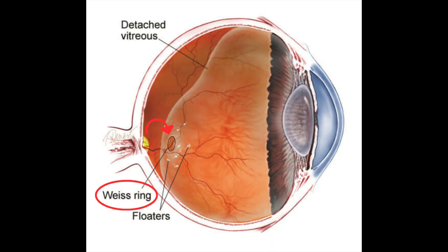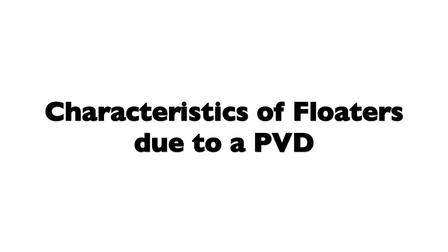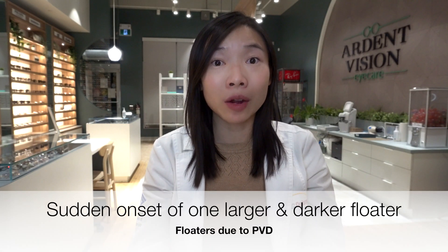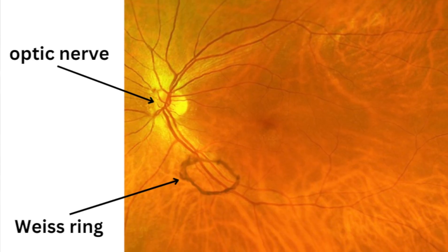As this happens, it usually tugs with it something called the Weiss ring, which is a pigmented or darker colored ring of tissue that originally acts as glue to attach the vitreous to the optic nerve at the back of the eyes. When the Weiss ring gets pulled into our line of vision, one might notice the following symptoms. Those with PVD may notice a sudden onset of one larger, more darkly pigmented floater — that is the Weiss ring. If the ring is intact, some may describe seeing a donut-shaped floater. If the ring is broken, some may describe seeing a line or snake-like floater.